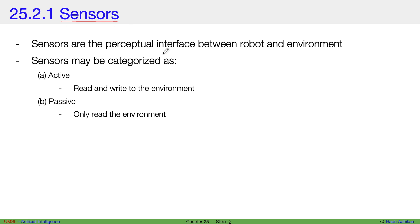Sensors are the interface, perceptual interface, between a robot and environment. A robot uses sensors in order to perceive the environment.